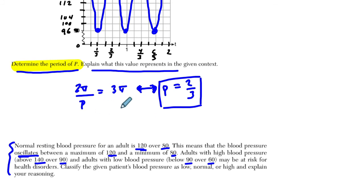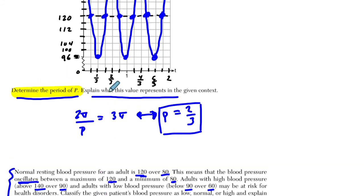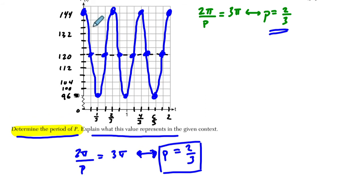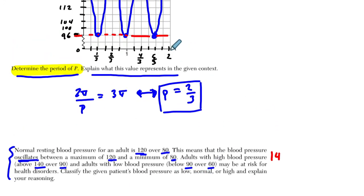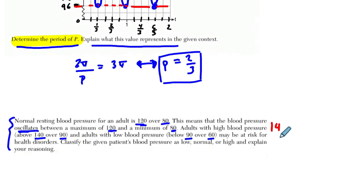You see this kind of happening here, going back and forth between a max of 120 and a min of 80. Adults with high blood pressure, 140 over 90. It says that an adult with low blood pressure, 90 over 60, may be at risk for health disorders. So you can look at this and identify someone's health. Classify this person right here.